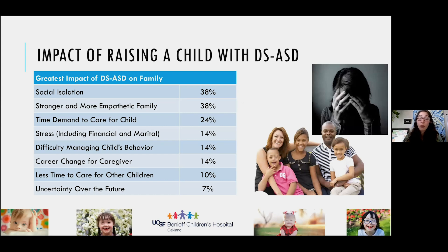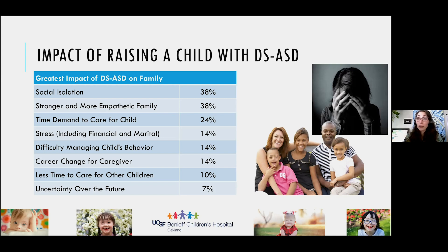We asked families what the greatest impact was of raising a child with a dual diagnosis. So many mentioned social isolation, time demands to care for the child, and a lot of stress. Outings can be difficult; the unpredictability of some behaviors can be difficult. But I also want to call out that 38% of our families said it made them a stronger and more empathetic family — so it's not all doom and gloom.